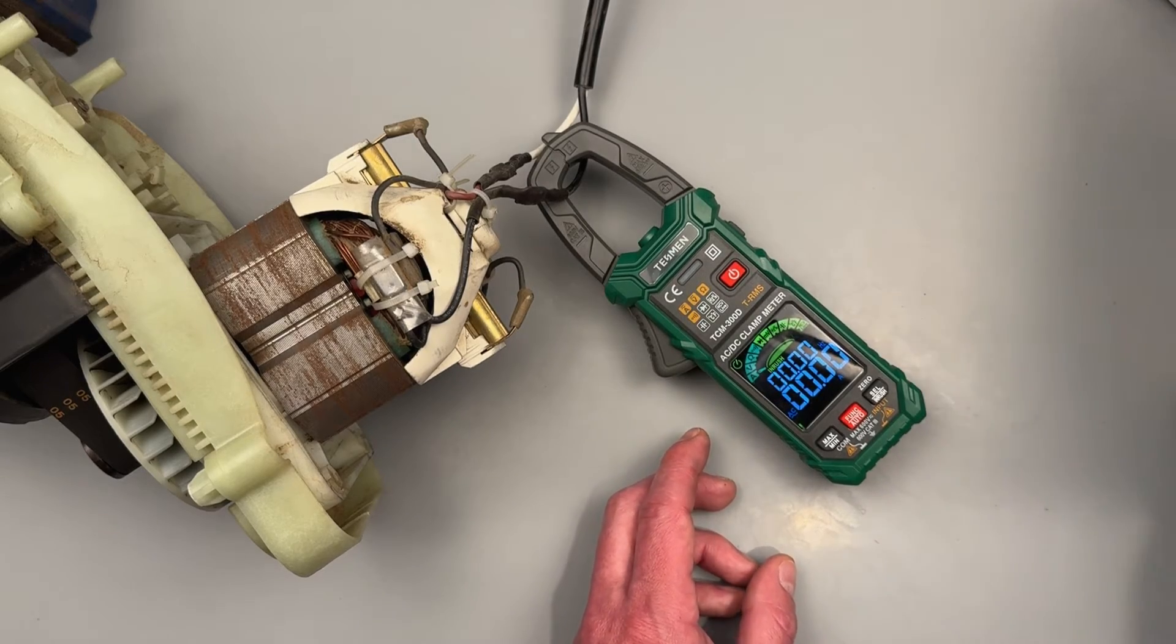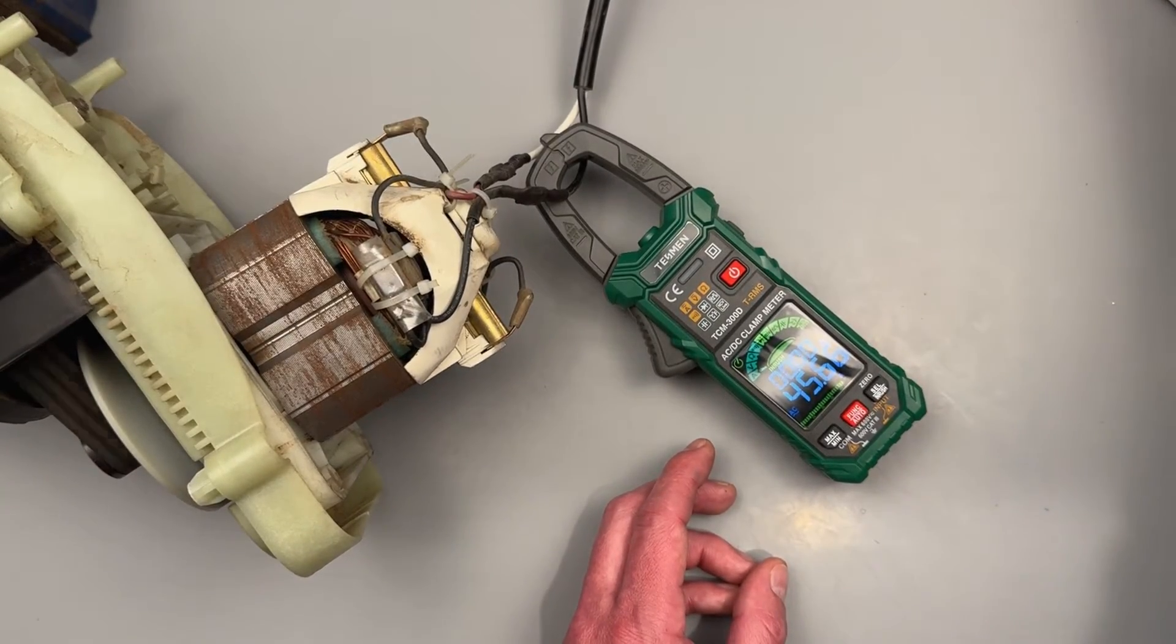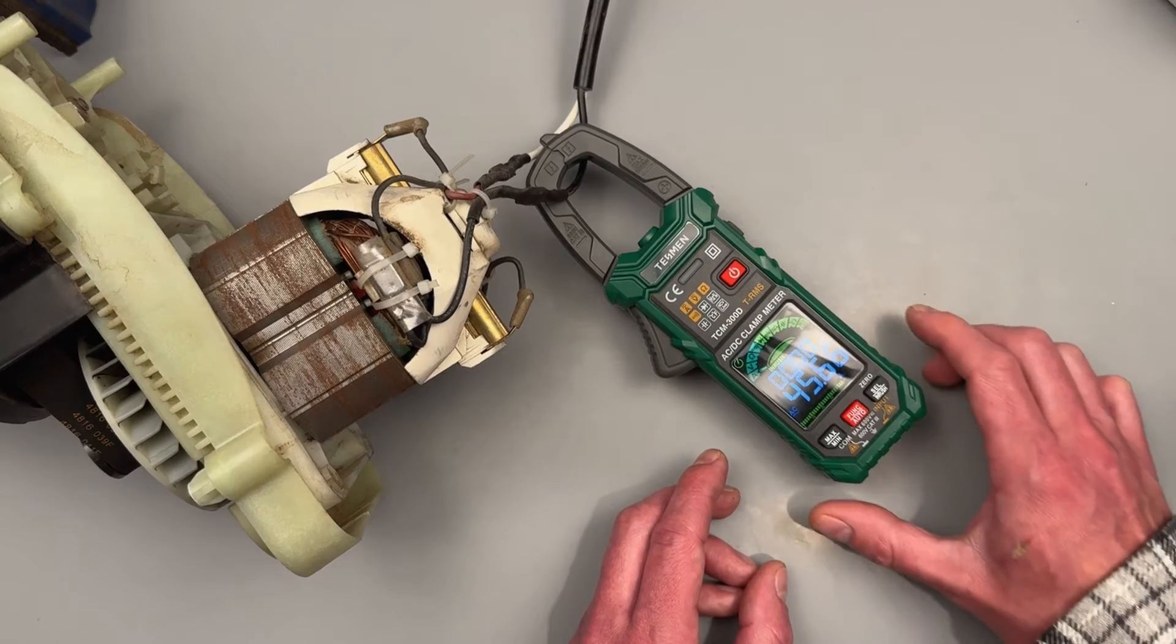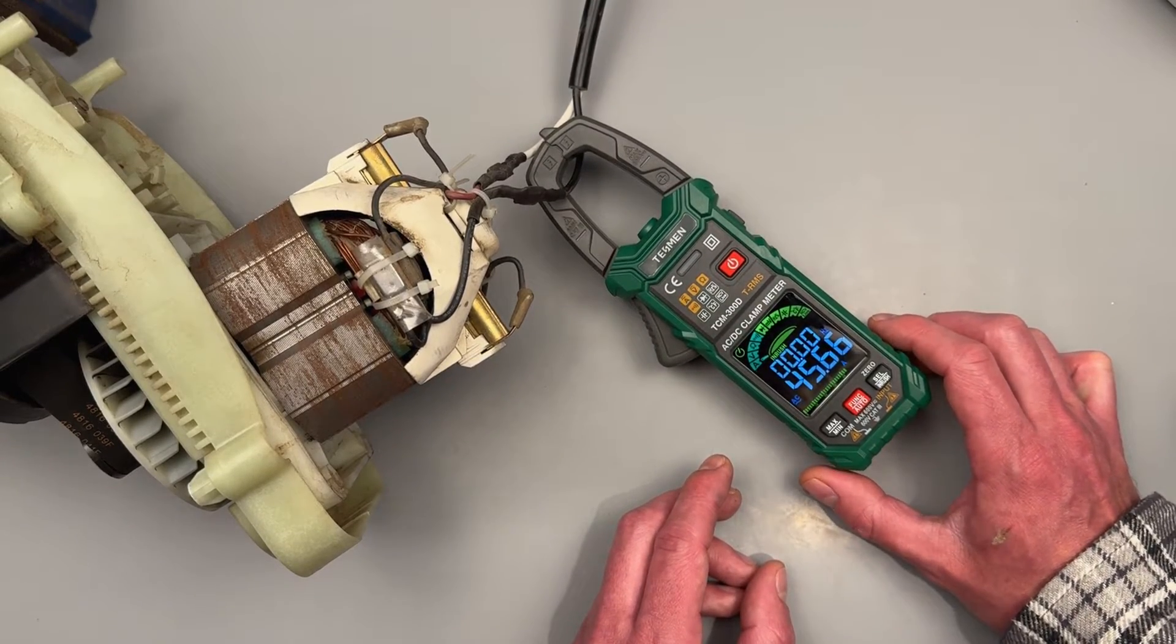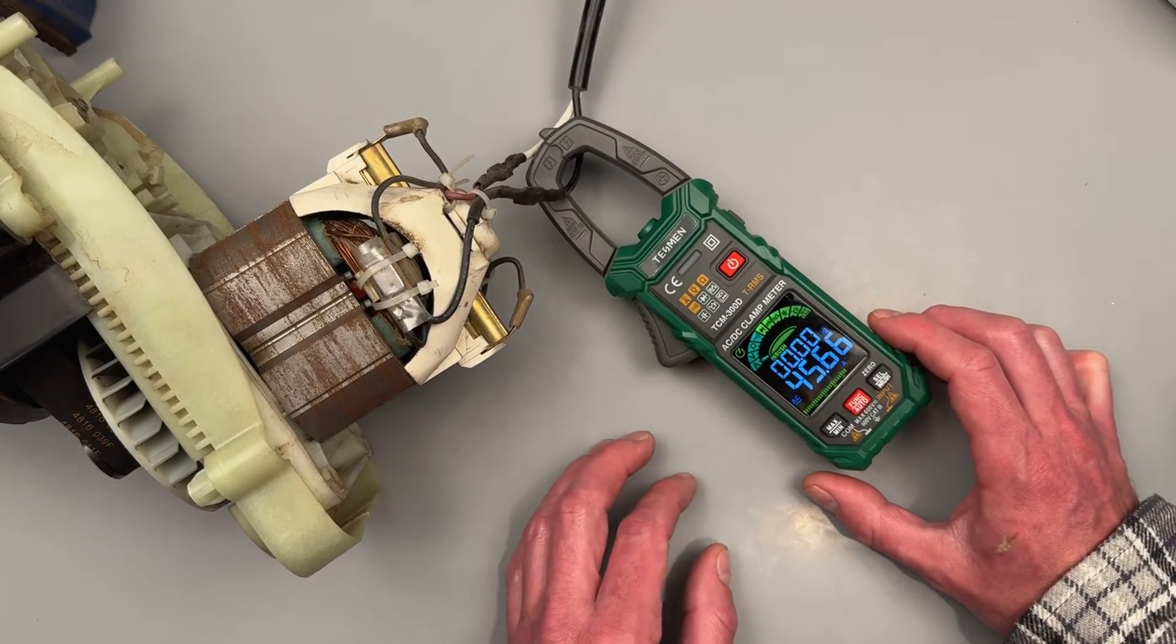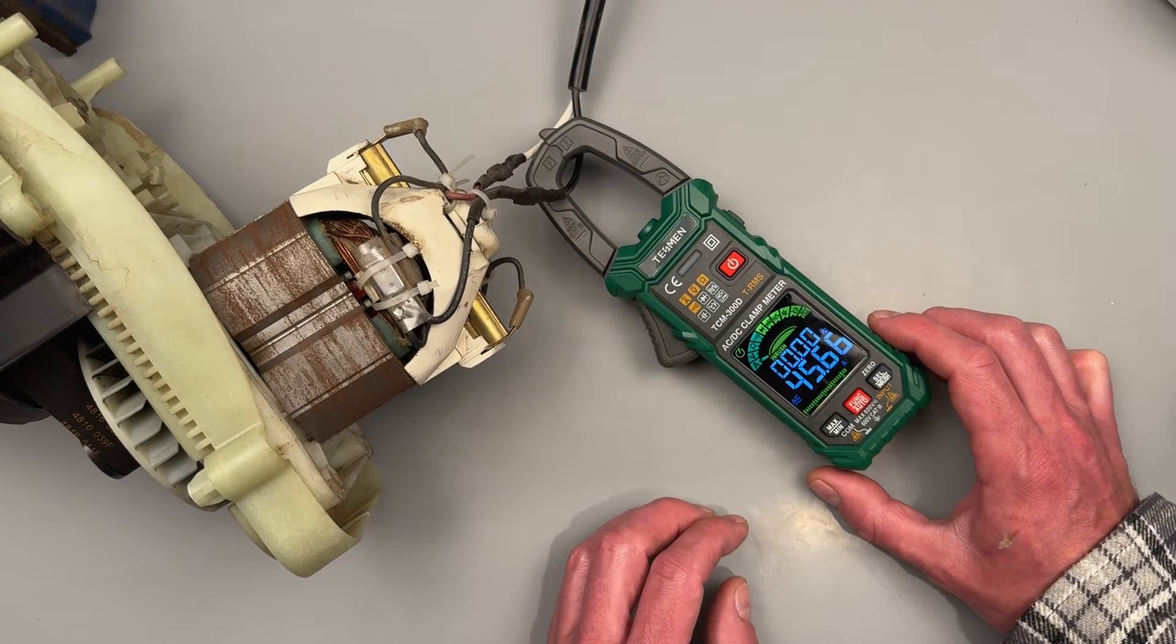I'll flick on this motor really quick and let's see the number that it comes up with. Okay, so this is telling us it took about 45 to 46 amps to kick on this motor initially. That's a pretty cool function.